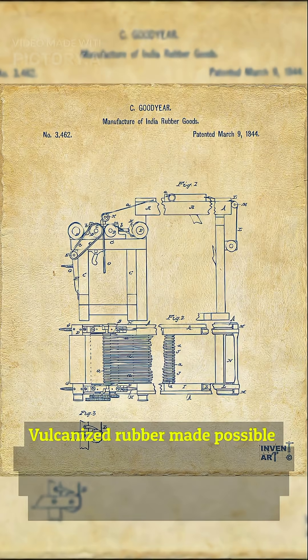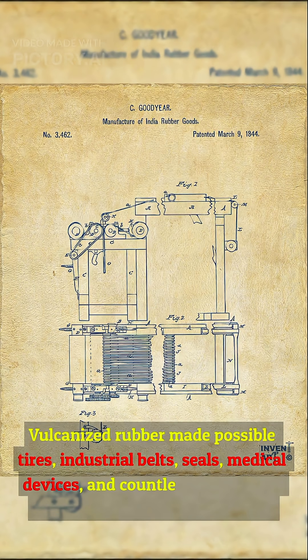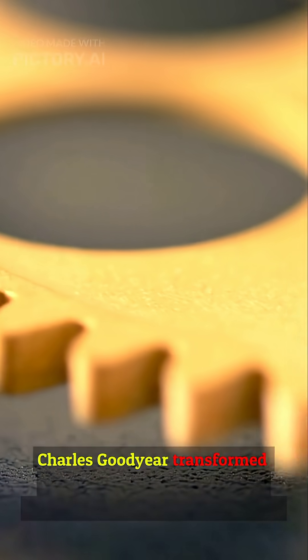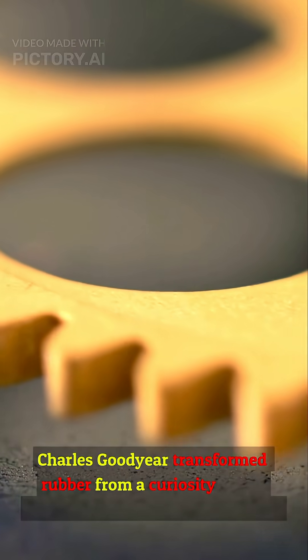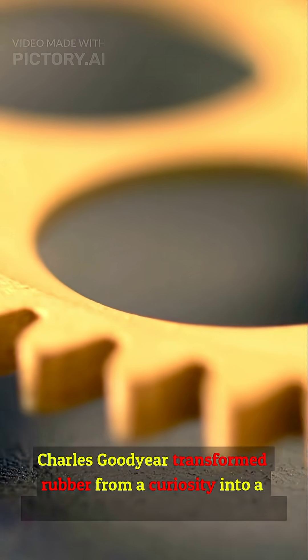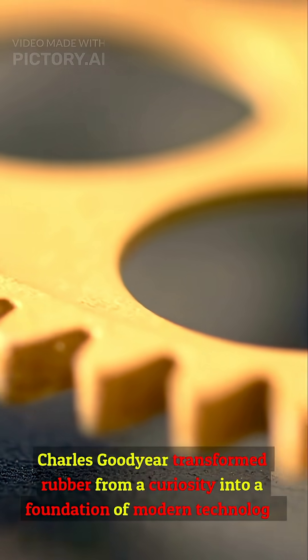Vulcanized rubber made possible tires, industrial belts, seals, medical devices, and countless mechanical systems that power modern life. Charles Goodyear transformed rubber from a curiosity into a foundation of modern technology. His contribution to science and materials engineering still rolls the world forward today.